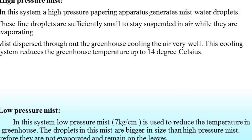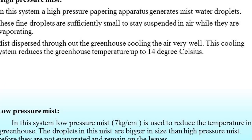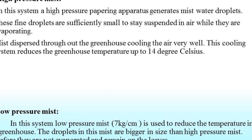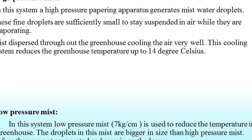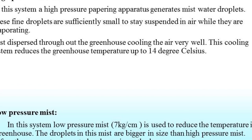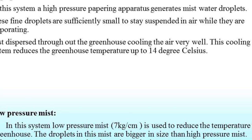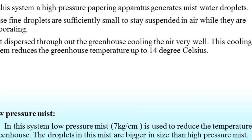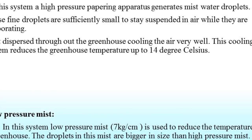The last method is low pressure mist. In this system, the droplet size is 7 kg per centimeter. These are used to reduce temperature inside the greenhouse, but the droplets are bigger in size compared to high pressure mist. Therefore, they do not evaporate well in the air and remain on the leaves. So this method is not used commercially to reduce temperature inside the polyhouse. We will continue this topic in the next lecture. Thank you.